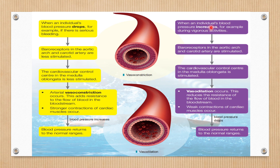The opposite happens when blood pressure is increased, especially during vigorous activities. The baroreceptors in the aortic arch and carotid artery become highly stimulated, and the cardiovascular control center in the medulla oblongata is much more stimulated. This causes the arteries to dilate, making the lumen bigger — vessel dilation.